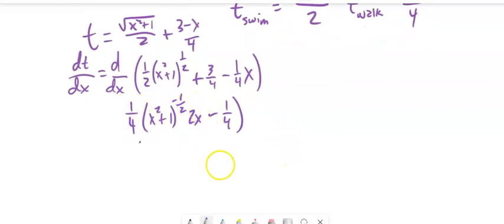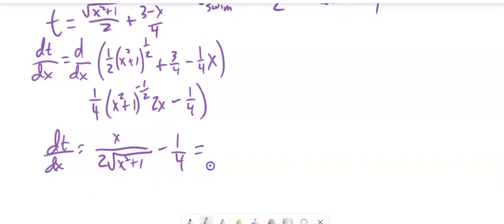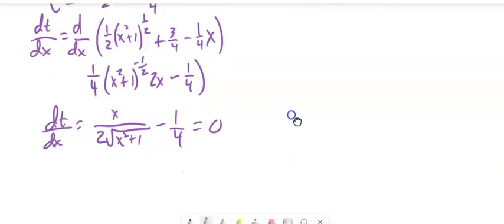So I'm going to clean this up a little bit. 2X over 4, and since that's a negative exponent, this is going to be over square root of X squared plus 1. So there's my derivative. And this 2 over 4, I could reduce that to 1 half. So there's my derivative. That's how the time is changing relative to how X changes. And since I'm minimizing, I want to find extrema. I'm going to set that equal to 0.